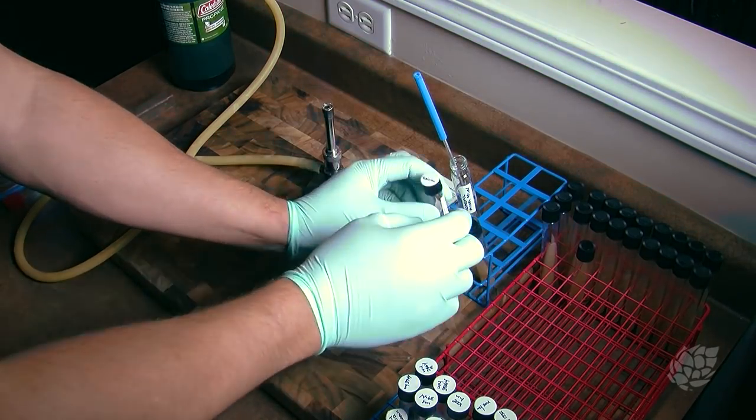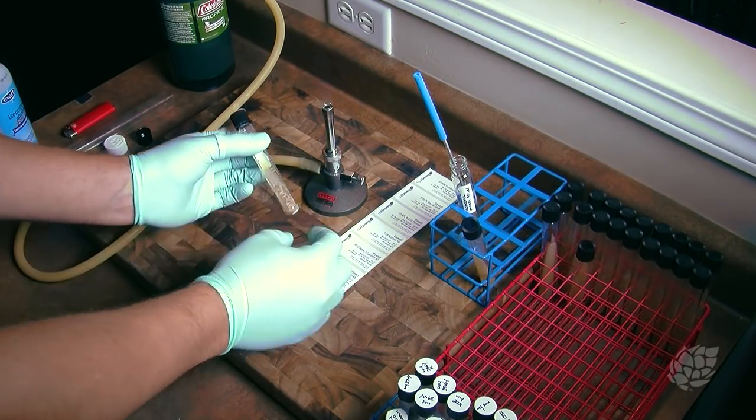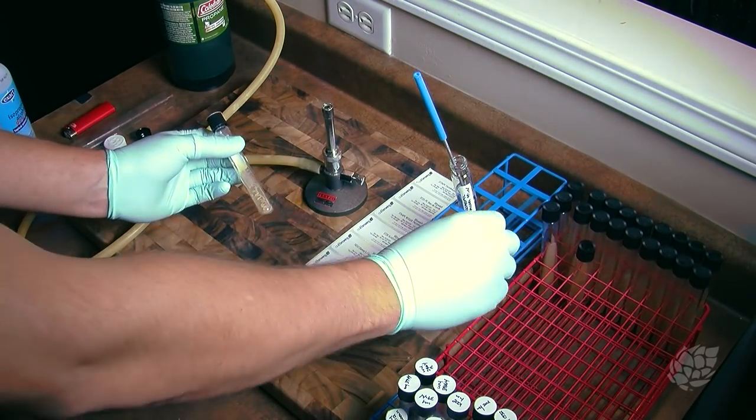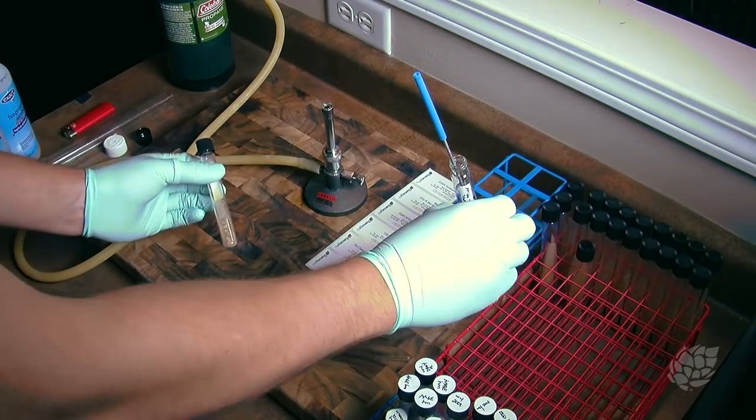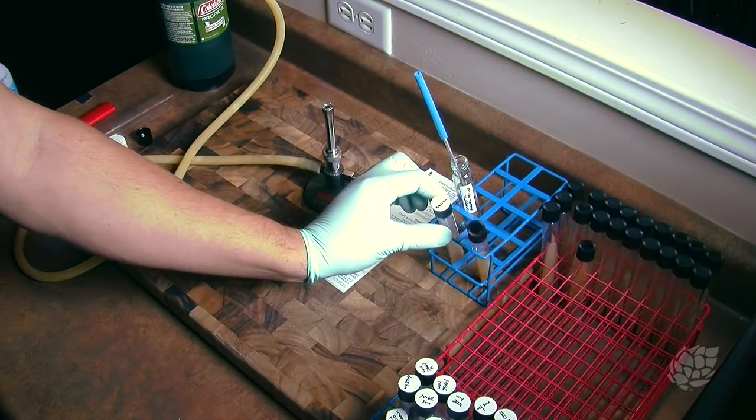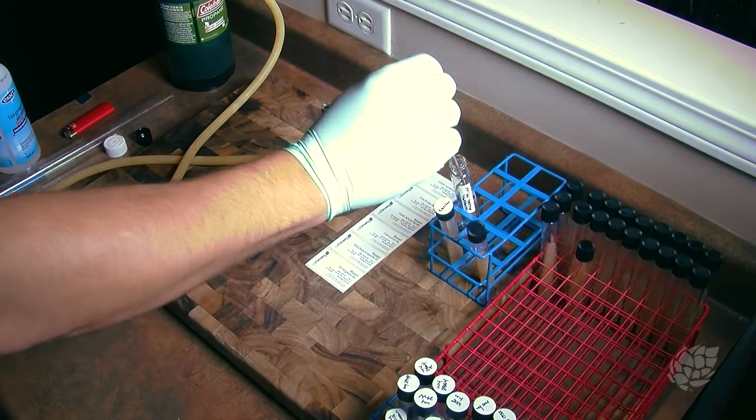Really all we're going to do here is transfer a sample of the yeast from this slant over to this one and let it grow on there. We're going to incubate it for a little bit and off it goes.